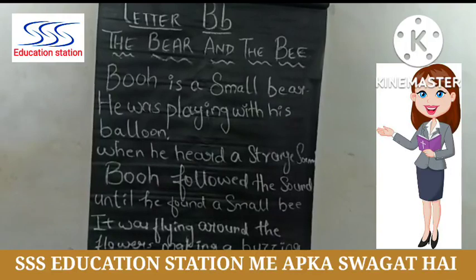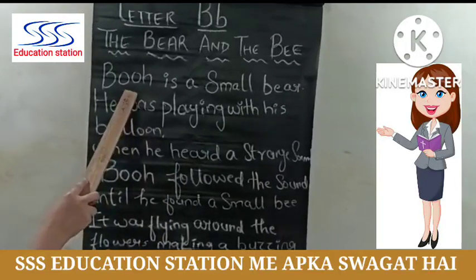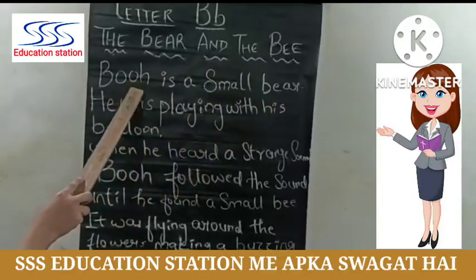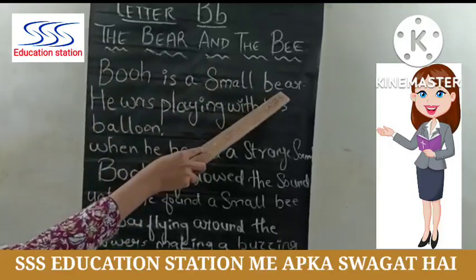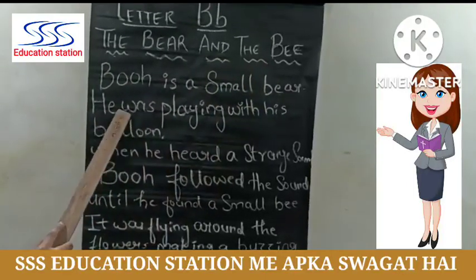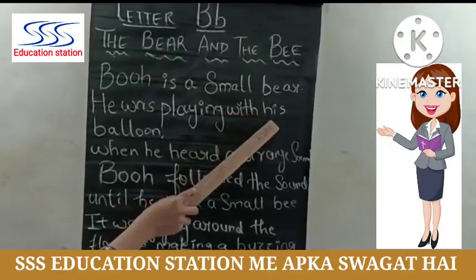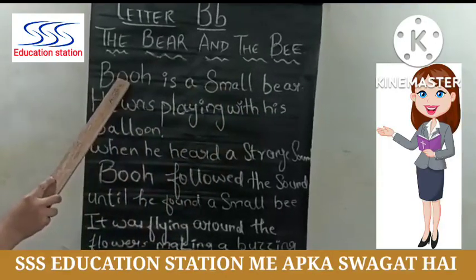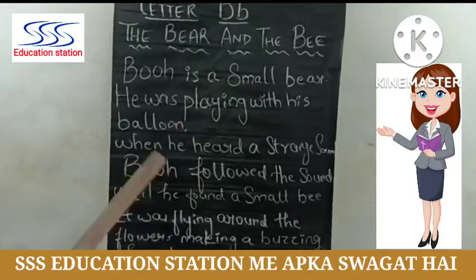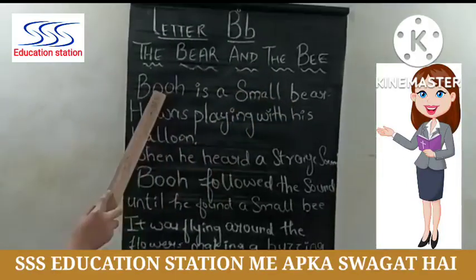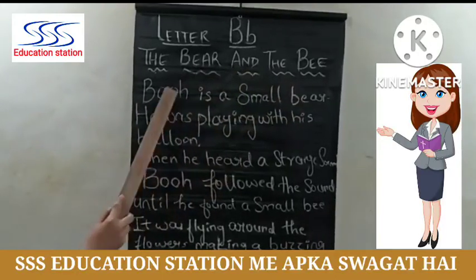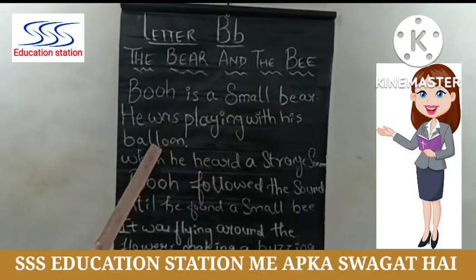Let's start this story. Boo is a small bear — Boo bear का नाम था. He was playing with his balloon. Boo के पास एक balloon था, वो उसके साथ खेल रहा था.